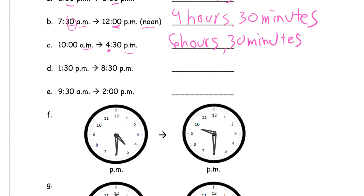1:30 p.m. to 8:30 p.m. The minutes are both 30 minutes, so we're not going to add any minutes. It's going to go 1:30, 2:30, 3:30, 4:30, 5:30, 6:30, 7:30, 8:30. So how many hours is it? 1, 2, 3, 4, 5, 6, 7 hours.